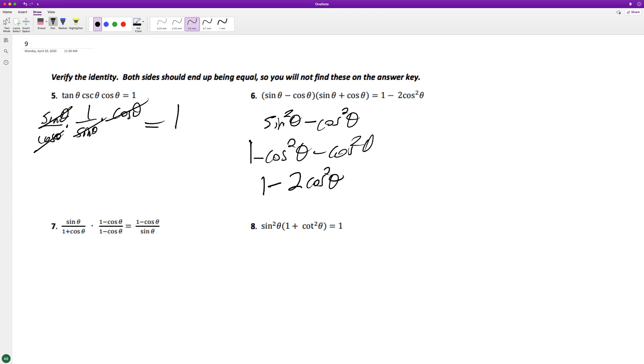Here, let's get a common denominator of 1 plus cosine, 1 minus cosine, so the left will multiply by the 1 minus cosine, and the right will multiply it by the 1 plus. So we get sine theta times 1 minus cosine theta.